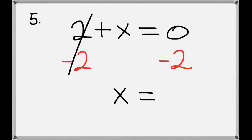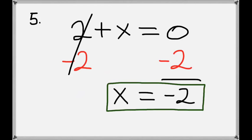And on the right hand side we have 0 minus 2, so we'll be left with negative 2. The 2 and the minus 2 cancel on the left hand side, just leaving us with x. So our final answer is x equals negative 2.